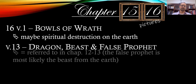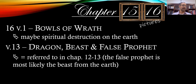In verse 13, the dragon, a beast, and a false prophet are mentioned. In Chapters 12 and 13, if you remember, there was the dragon — Satan — the beast, which is probably the beast out of the sea, representing ungodly governments, and then the false prophet, probably the beast out of the earth, which would be spiritual enemies of the Lord.